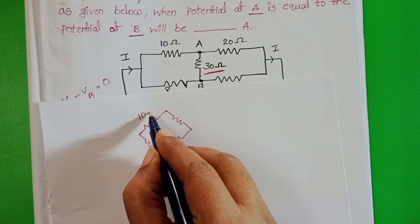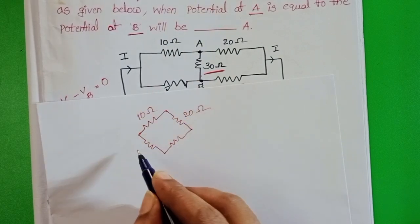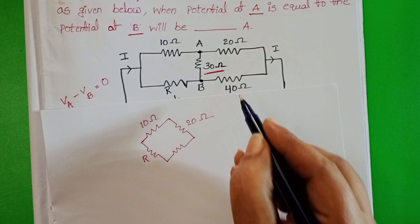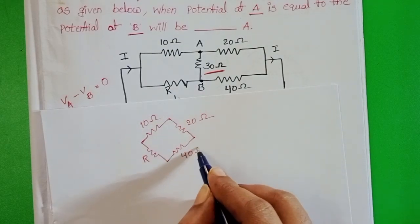First resistor 10 ohms, second one 20 ohms, and this is unknown resistor, and this one is 40 ohms.